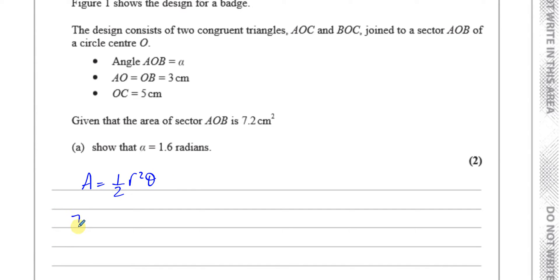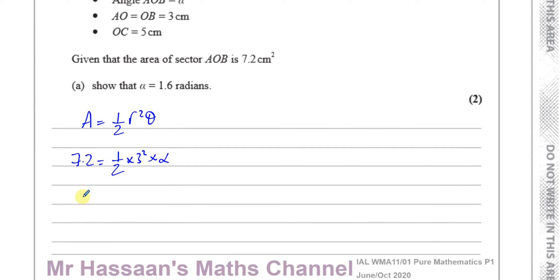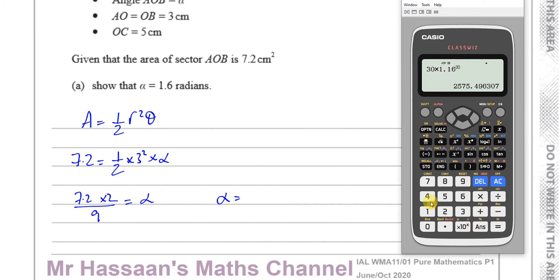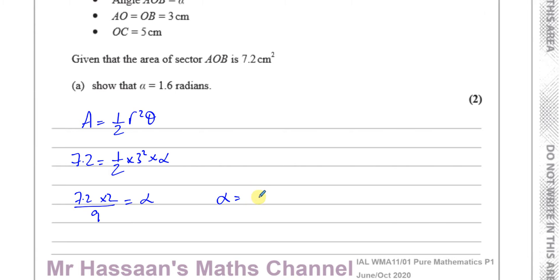You know the area is 7.2 and the radius is 3 centimeters, so it's a half times 3 squared, and the angle is alpha. We're going to have 7.2 times 2 over 9 equals alpha. So alpha equals 7.2 times 2 divided by 9, which gives 8 over 5, which is 1.6. So we have 1.6 radians. There's the answer to part A — pretty simple.